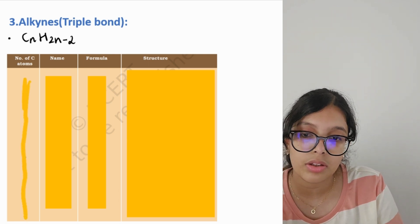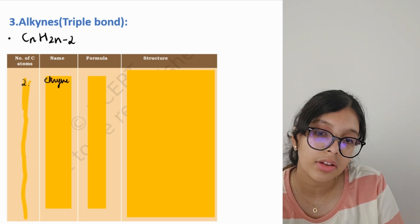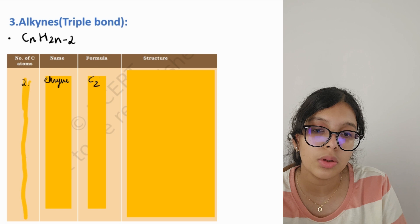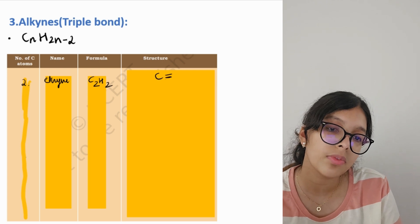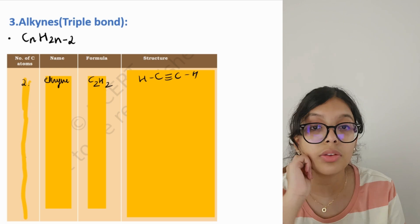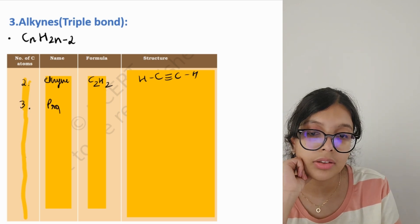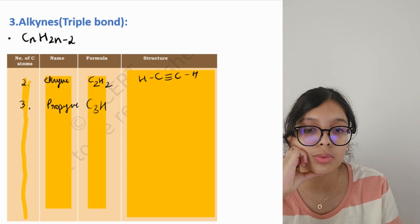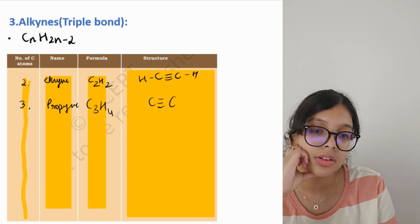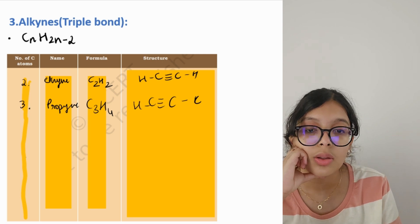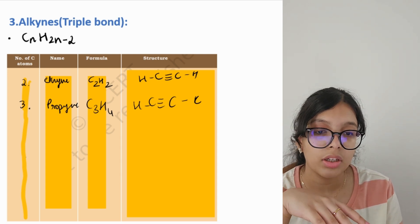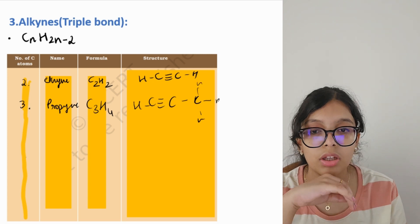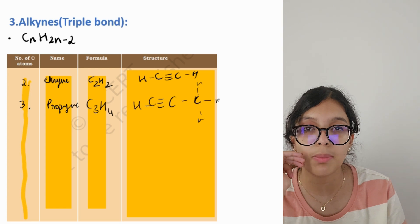For propyne it's C3H4. The structure shows a triple bond between the first two carbons, with one hydrogen on the first carbon and one hydrogen on the last carbon — the middle carbon has no hydrogen because all four bonds are already satisfied by the triple bond and single bonds to adjacent carbons. Try naming other alkyne compounds for practice.